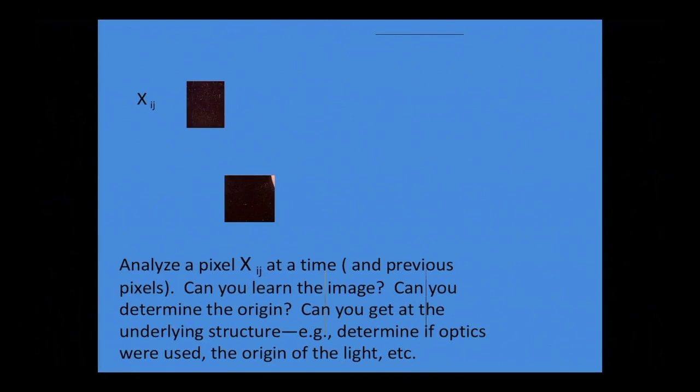I want to start with a two-dimensional analogy in terms of our objectives. Here's the problem: you have some image and it's masked, or there's a tremendous amount of noise, or you're just collecting pieces of the data successively. The question is, can you identify the image, and beyond that, can you get at information regarding the physics of the image?